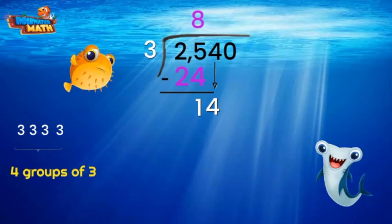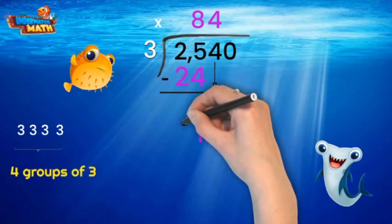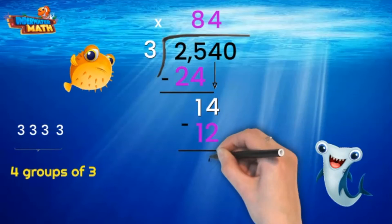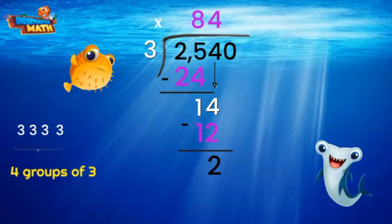Thanks again! The 4 goes above the 4. Multiply 4 times 3, then subtract 12 from 14. We get an answer of 2. We go back up to the dividend and bring down the 0.